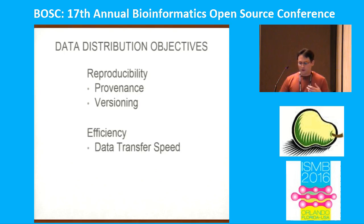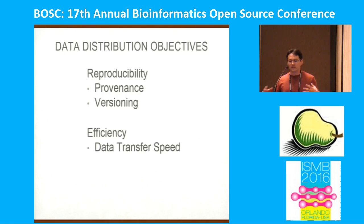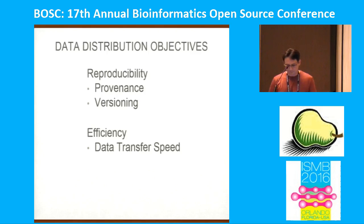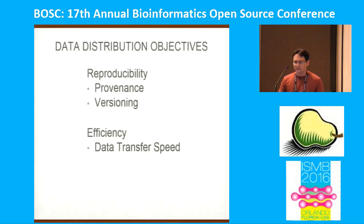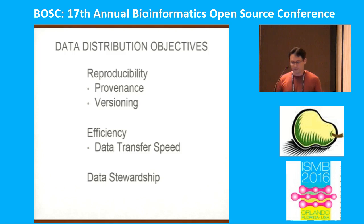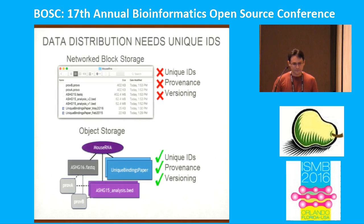We must also keep efficiency in mind. Core sequencing facilities generate large quantities of data that need to be ingested in a timely manner. Any tools they adopt for reproducibility must transfer data efficiently. Finally, we need to clearly communicate data stewardship transfer between core facilities and principal investigators.